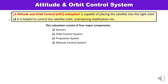The attitude and orbit control subsystem consists of four major components: sensors, orbit control system, propulsion system, and attitude control system. Before discussing these components in detail, you must understand why there is a shift in the satellite orbit and what forces impact the satellite causing changes in attitude and orbit beyond the required limit.